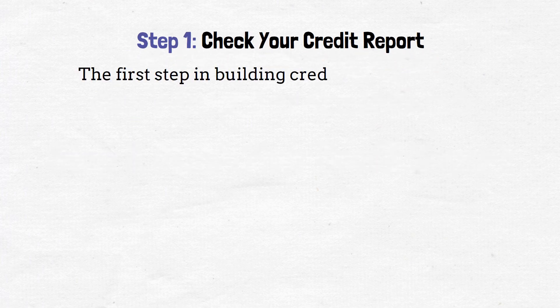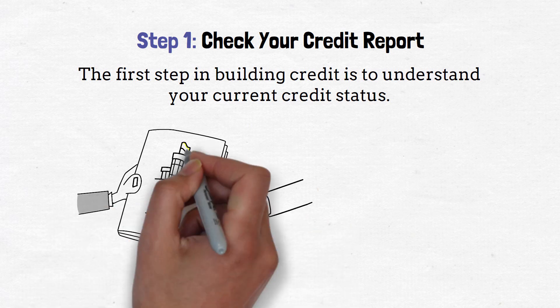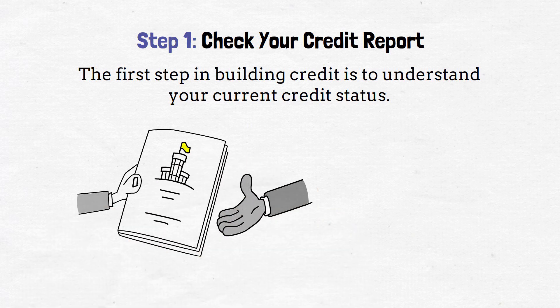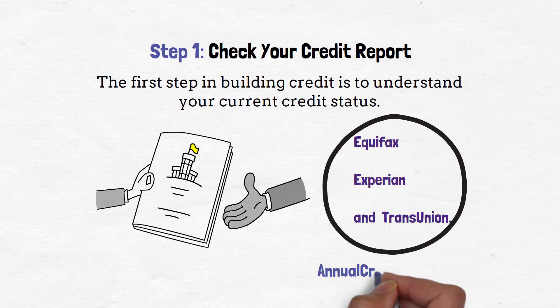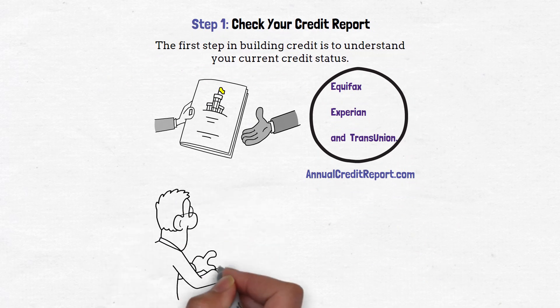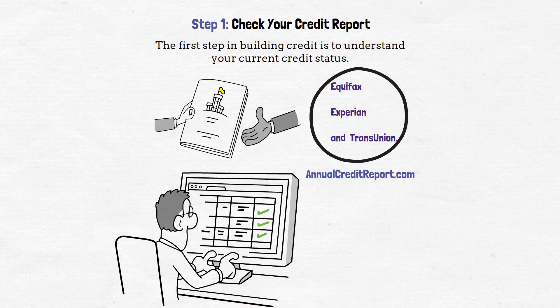Step 1: Check your credit report. The first step in building credit is to understand your current credit status. Obtain a copy of your credit report from each of the three major credit bureaus: Equifax, Experian, and TransUnion. You can request a free copy of your report from each bureau once a year through annualcreditreport.com. Review these reports carefully for errors, discrepancies, or accounts you don't recognize. Dispute any inaccuracies to ensure your credit history reflects your true financial behavior.